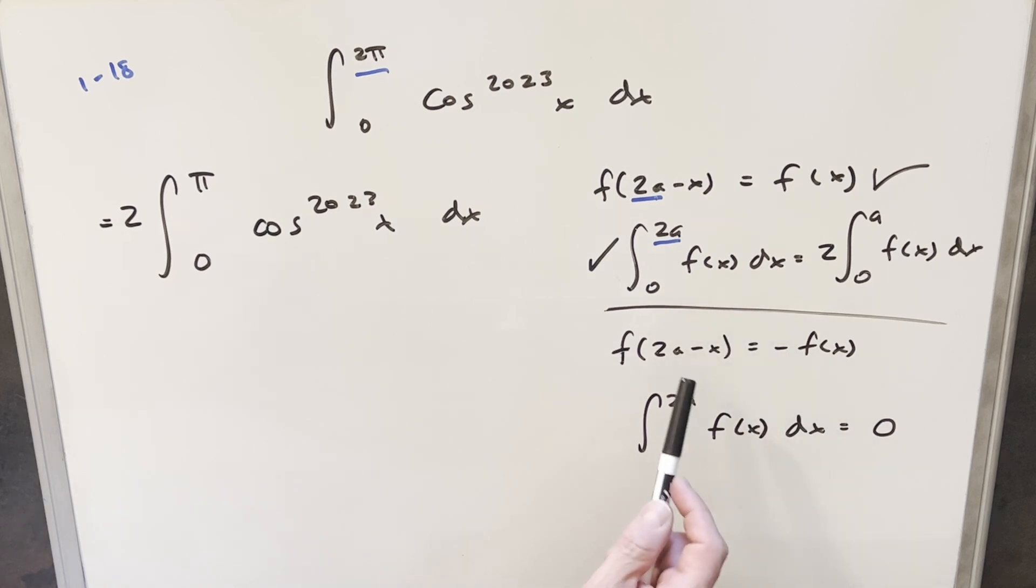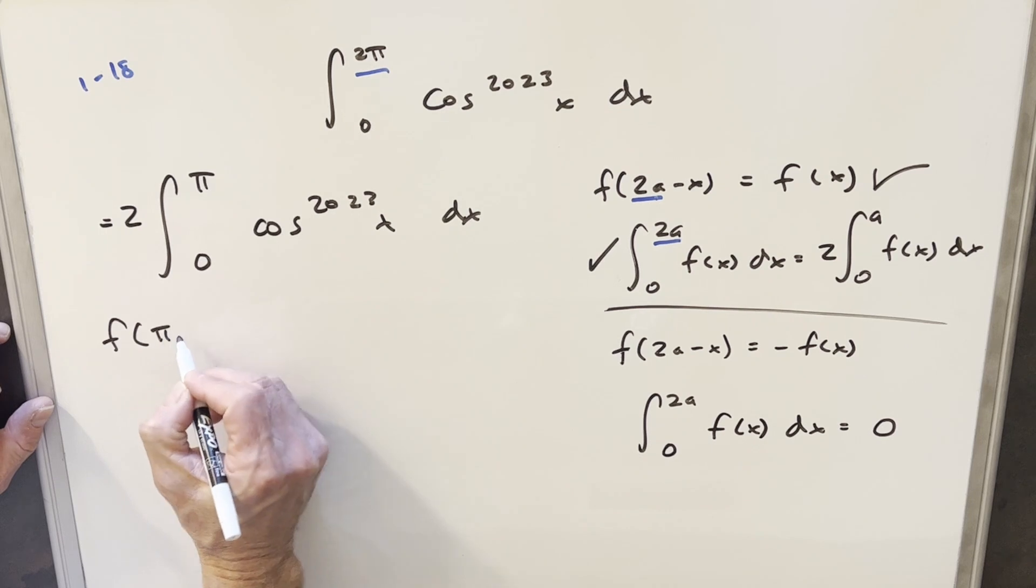So, that completes our first part. Now, we just want to do this second section here, and so we're doing a really similar check here on f of 2a minus x, but now our 2a, in this case, is just π. So, what we want to do is we want to check f of π minus x.